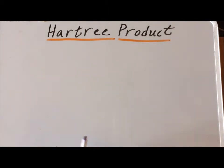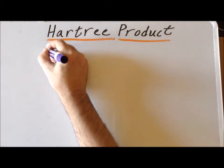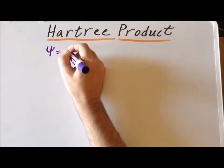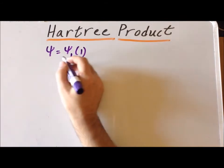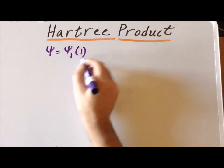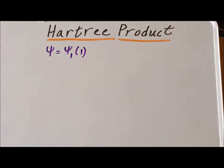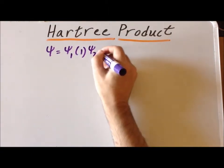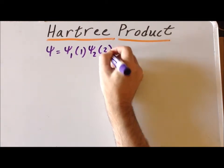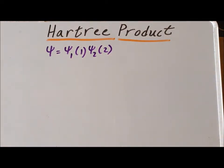For two electrons, the Hartree product wave function would be a function of this form, where we have ψ₁ of 1, so this is a wave function that's involved entirely with the first electron, times wave function number 2, which is a function of the second electron.